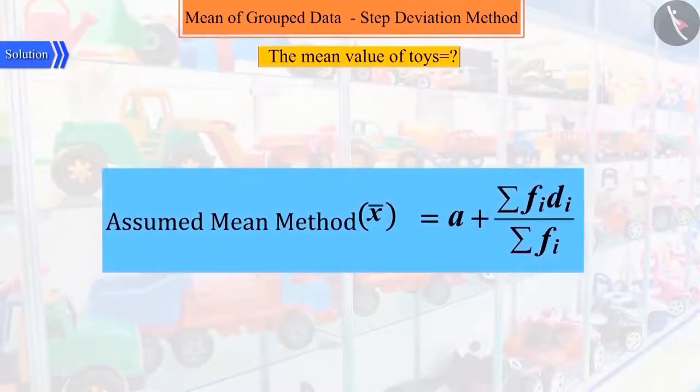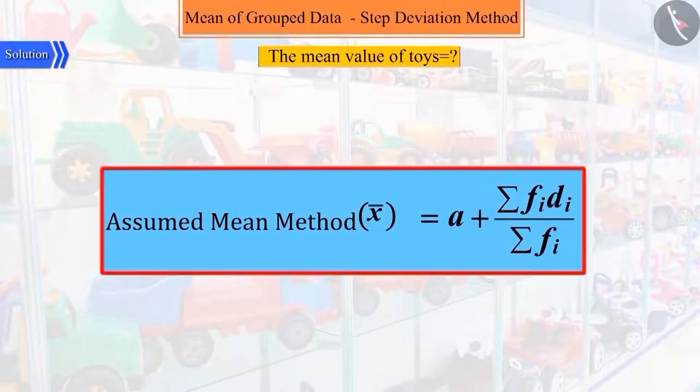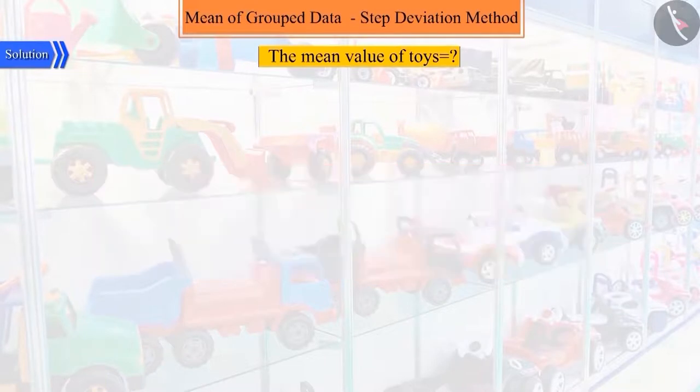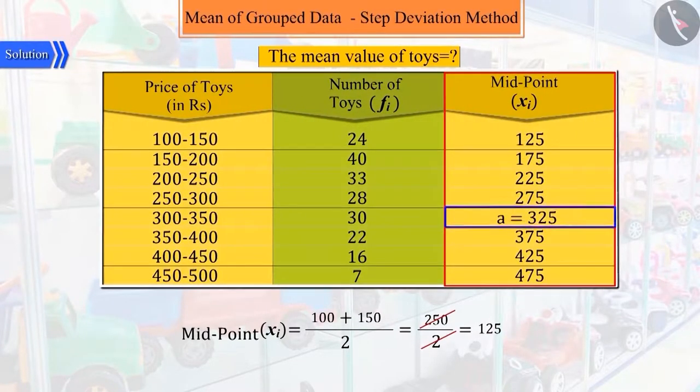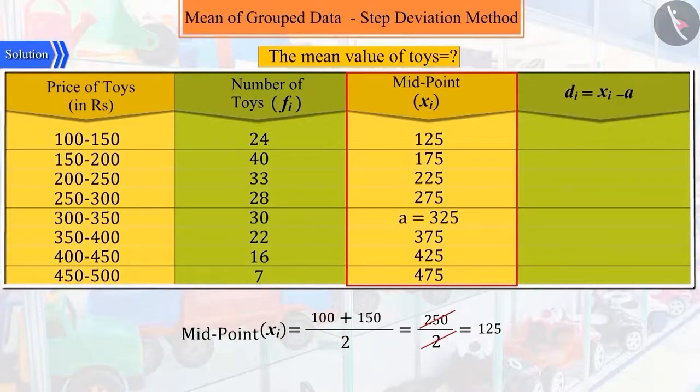In order to find the mean of grouped data, we learned about the assumed mean method in the previous video, where we choose an assumed mean A from the xi and represent the difference between each xi and A by di. On this basis, we can solve this question too.